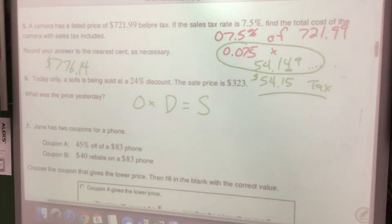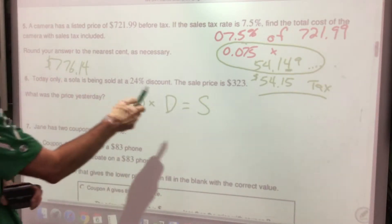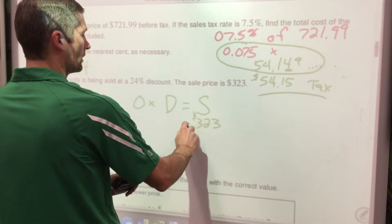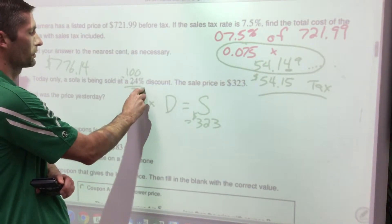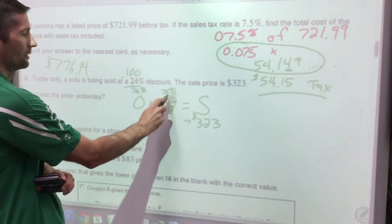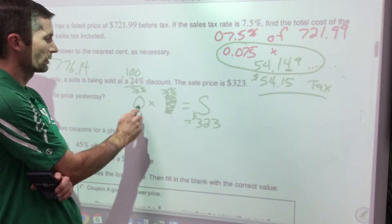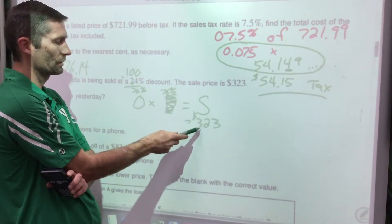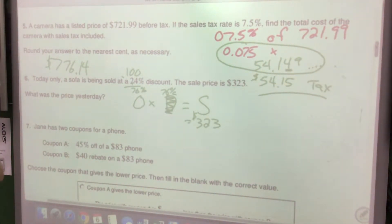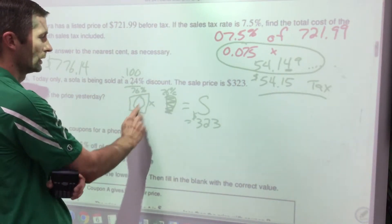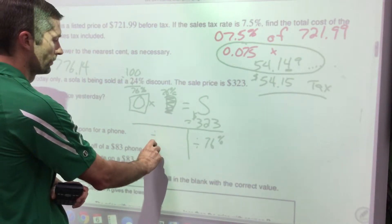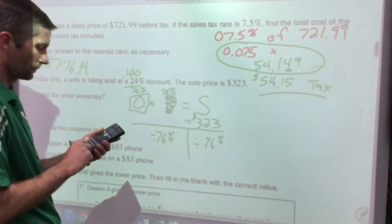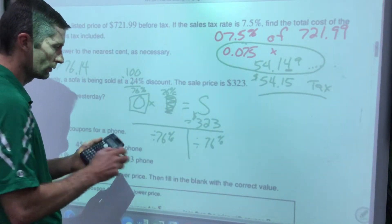The sale price is $323. Since you're getting 24% off, you're paying 100% − 24% = 76% of the original price. So: original price × 0.76 = $323. To isolate the original price, divide both sides by 0.76. So 323 ÷ 0.76 gives you $425 — that's the original price.